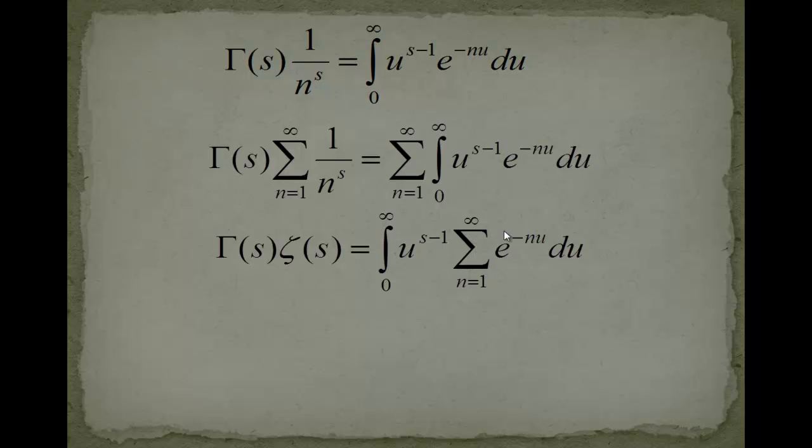As this is the geometric sum, we can use the formula for the infinite geometric sum. It's very important that e to the minus u is always smaller than 1, because u is only positive, so we have always smaller values than 1. We can use the geometric sum, which gives us 1 over 1 minus e to the minus u, and because we didn't start at 0 but started at 1, we have to subtract 1.